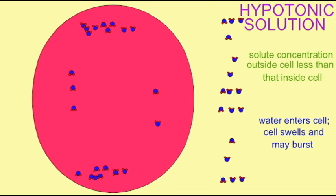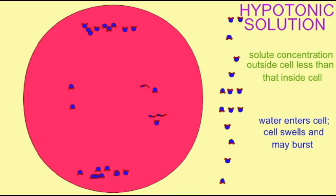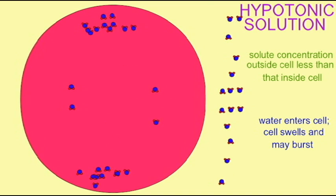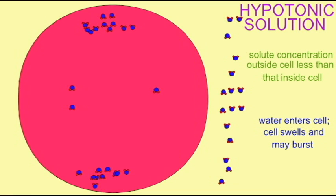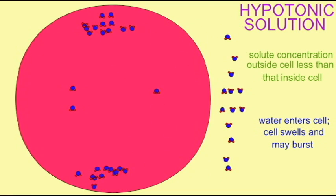Especially if a cell is placed into distilled water, which has no solutes whatsoever, the rate at which the water enters the cell is so great that the cell swells to the point where it explodes. All of the contents of the cytosol spill out, and then an empty cell membrane is left behind.